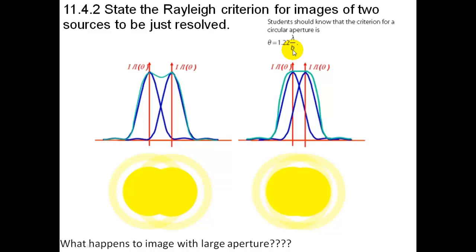So when you have a large aperture, the angle will be very small, which means that two sources that are very close together will be resolved with a large aperture.